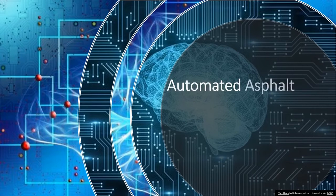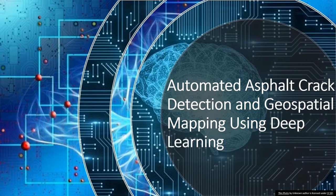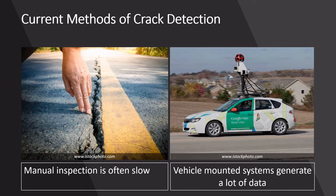Automated Asphalt Crack Detection and Geospatial Mapping Using Deep Learning. Current methods of crack detection — manual inspection — are often slow, and vehicle-mounted systems generate a lot of data. Can Artificial Intelligence (AI) provide a quick, accessible, and economic alternative?